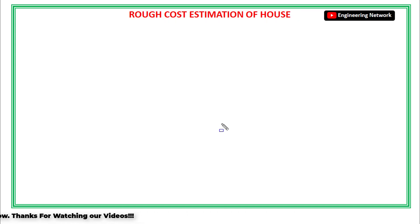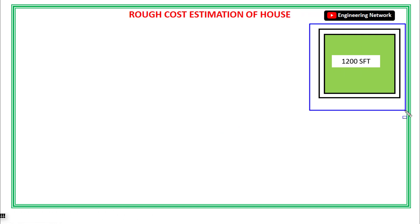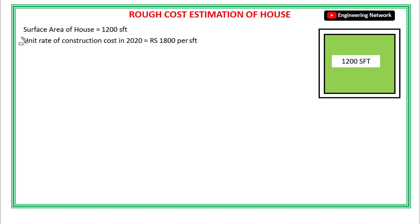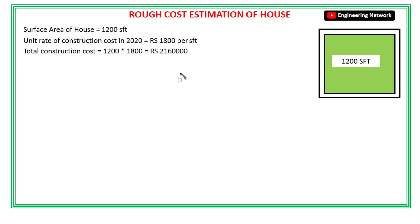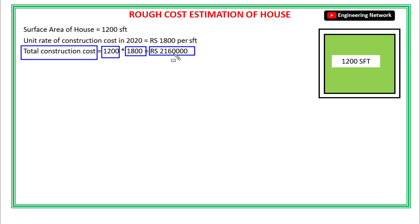As you can see, this is the house for which I want to do the rough cost estimation, and the total surface area of this house is 1200 square feet. Now we know that in 2020 the unit rate of construction cost for one square foot is 1800 rupees, which means that for one square foot you have to pay 1800 rupees, and it will include both materials and labor cost. So for 1200 square feet, the total construction cost is equal to 1200 multiplied by 1800, which becomes 21,60,000 rupees.